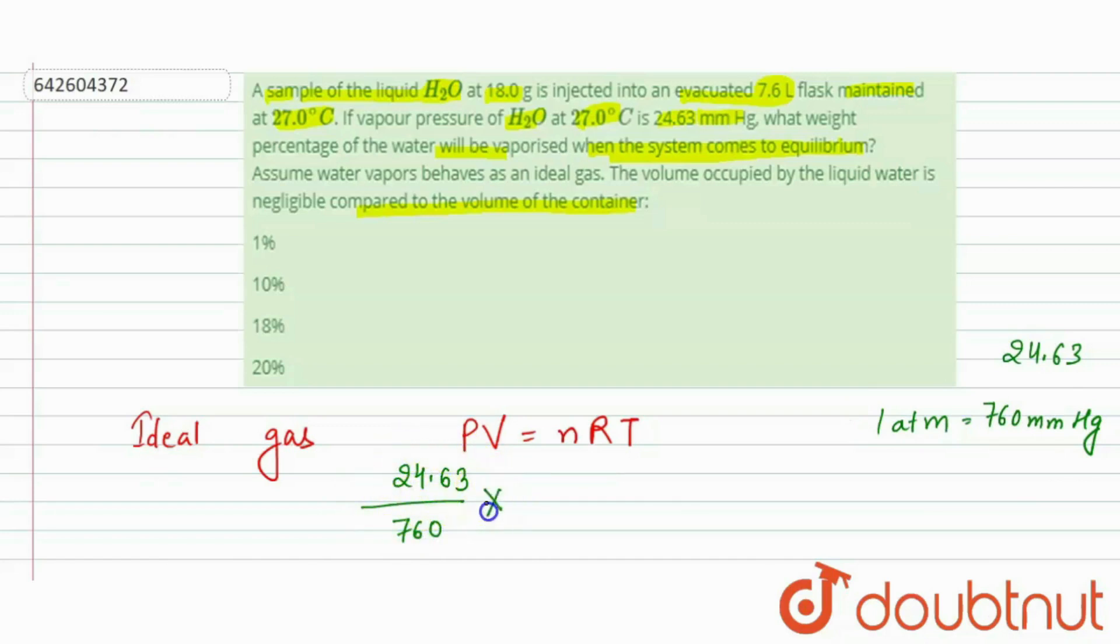And volume is 7.6 liter, it's already in the liter, is equal to number of moles of water into R is 0.0821, it's the constant value, and temperature is 27 degrees Celsius.